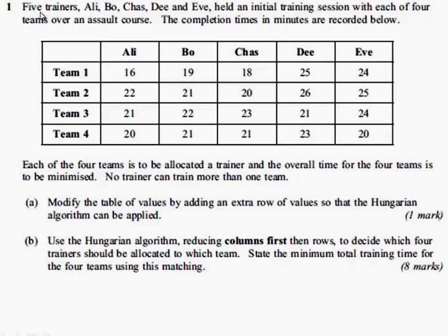Reading through the question we have five trainers: Ali, Bo, Chas, Dee and Eve. They've already held initial training sessions with each of four teams over an assault course. And in the table here we have the completion times in minutes.